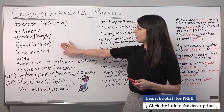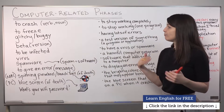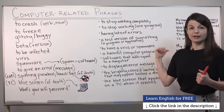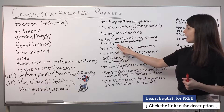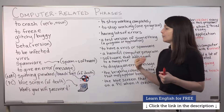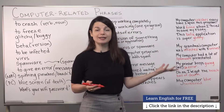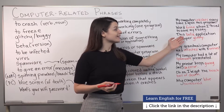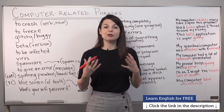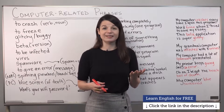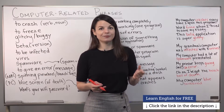The next word is 'beta.' You might see 'beta version.' A beta program or beta application is a test version of something — usually a program or application. A beta version might have lots of glitches, or it might be super glitchy, because it's a test application. So a beta something is a test something.